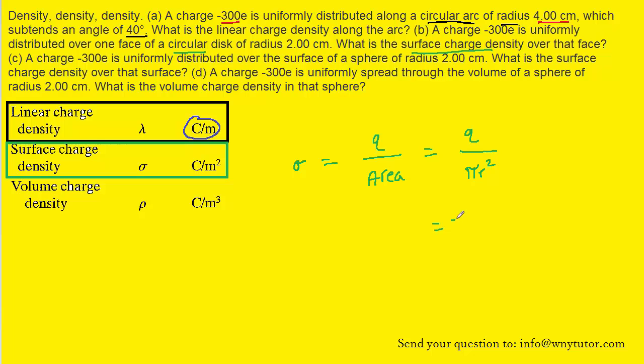So we'll take the amount of charge, which was once again negative 300 times E, 1.6 times 10 to the minus 19th coulombs. And then we'll divide that by pi times the radius of this circular disk squared. The radius is in centimeters. So make sure you multiply that by 10 to the minus 2 in order to convert it into meters. And then also don't forget to square it.